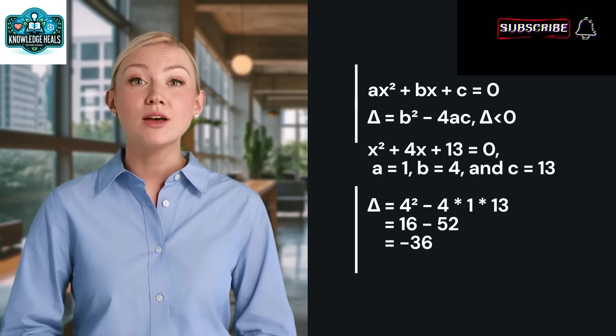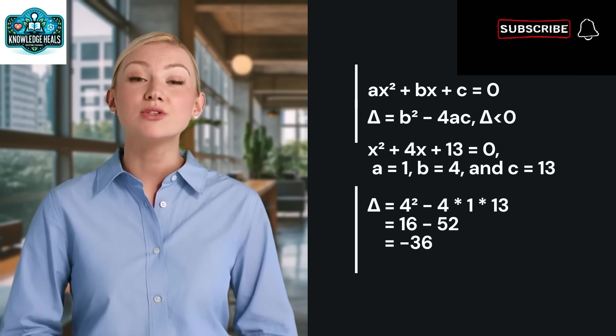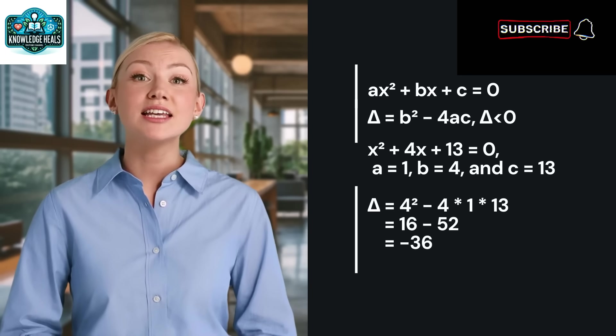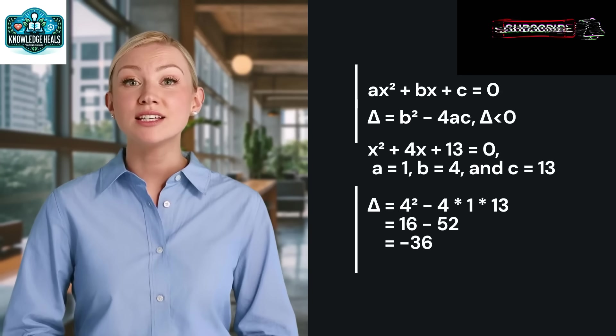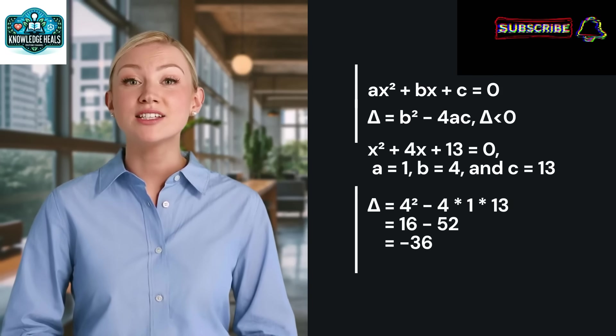Let's solve x square plus 4x plus 13 equal to 0. Here, A equal to 1, B equal to 4, and C equal to 13. The discriminant is delta equal to 4 square minus 4 multiplied by 1 multiplied by 13 equal to 16 minus 52, which is equal to minus 36.